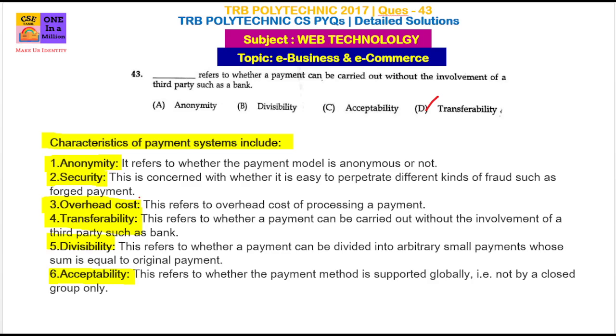Forged payment — forged users will be stopped and blocked. Next is overhead cost. If we use an app to pay a service amount, that cost is minimum.